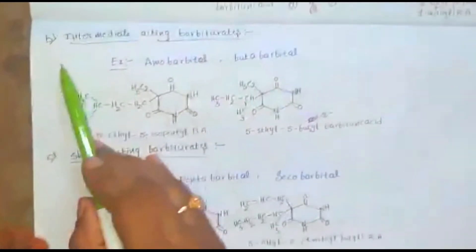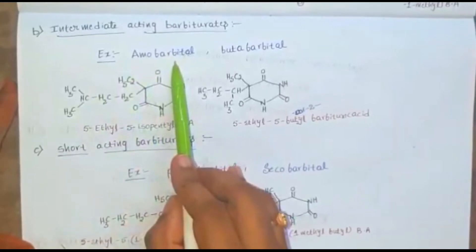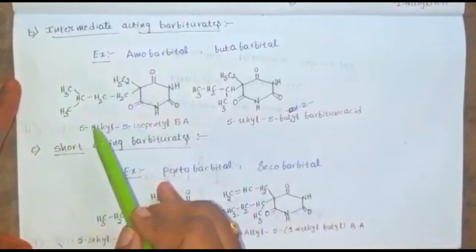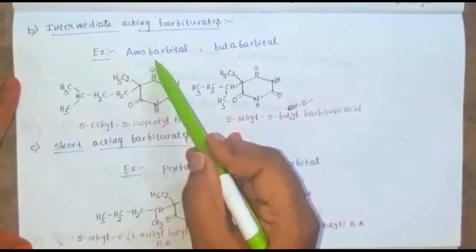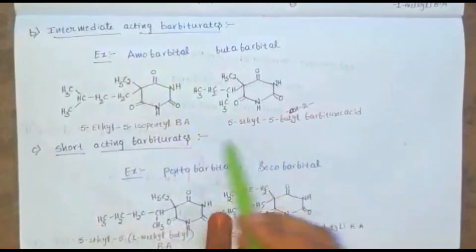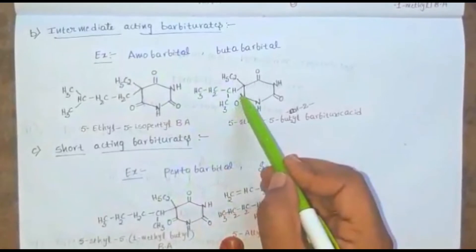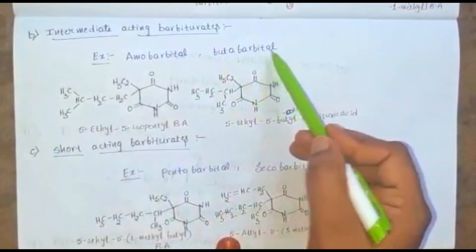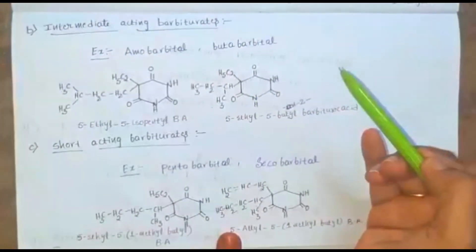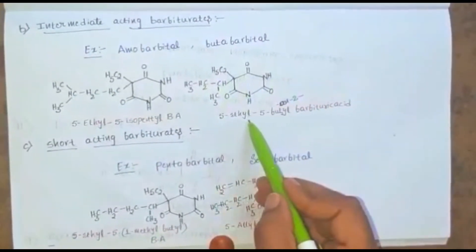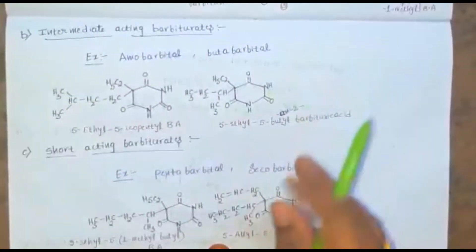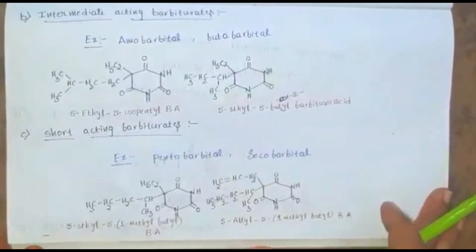The second subtype is intermediate-acting barbiturates. Example: amobarbital — an isopentyl side chain is substituted at the fifth position. Butabarbital — a butyl side chain is substituted at the fifth position. The nomenclature is 5-ethyl, 5-butan-2-yl barbituric acid.